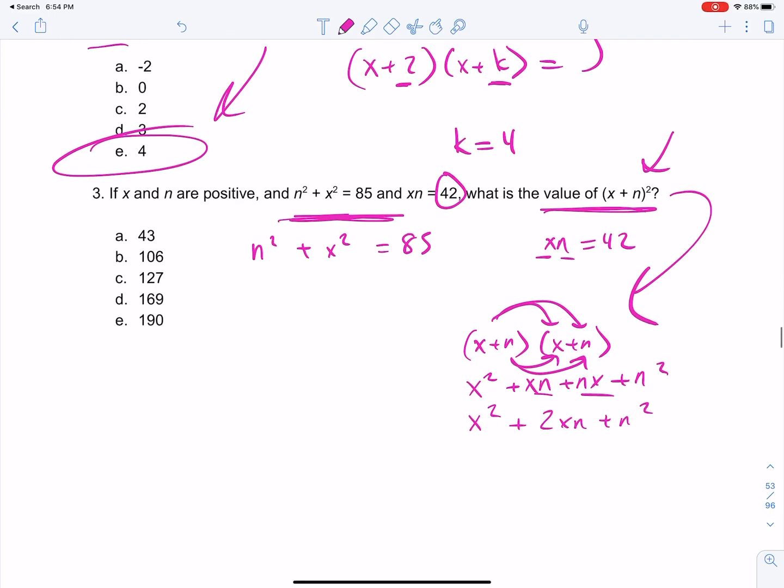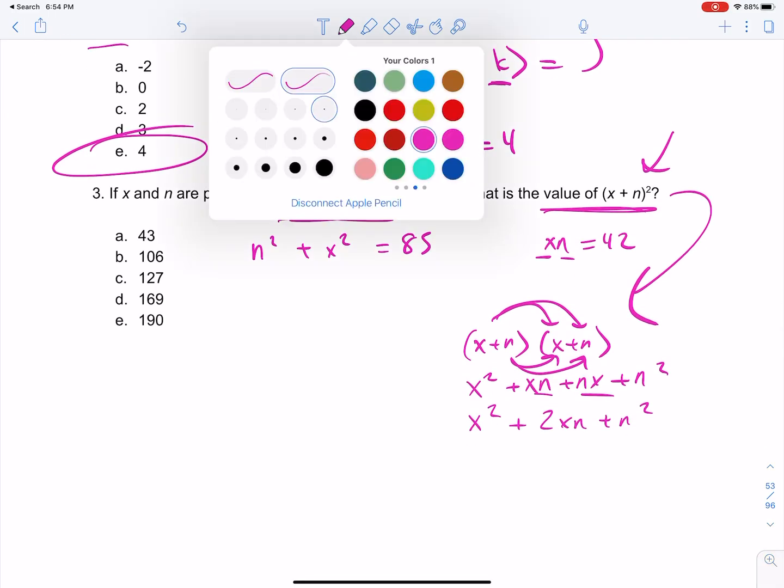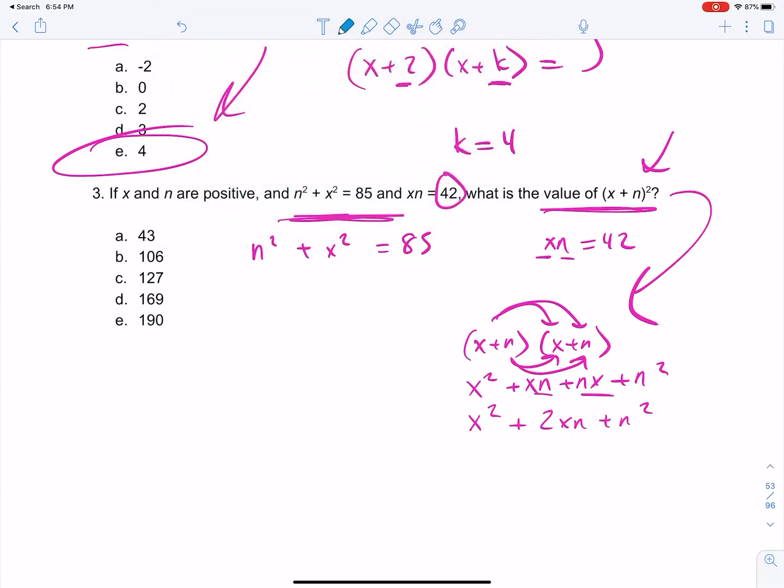Now, here's what I'm going to do. I'm just going to write this a little differently, and I'm going to use a different color. We can remember, if you're adding terms, you can put them in whatever order you want. So you can say x squared plus n squared plus 2xn is what we have here, right? Which is the same as this.